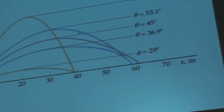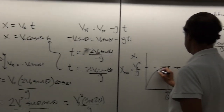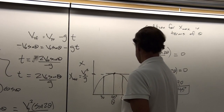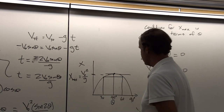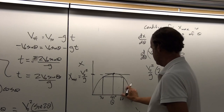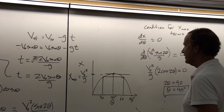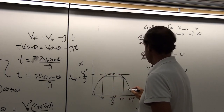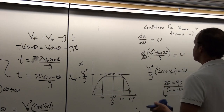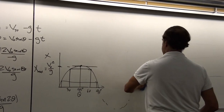Notice also that because of the symmetry of this curve, if we're at 30 degrees or at 60 degrees, we should have the same horizontal range — they're equal distances on either side of 45. Similarly, 10 degrees and 80 degrees should yield the same horizontal range. This tells us that complementary angles produce the same horizontal range.